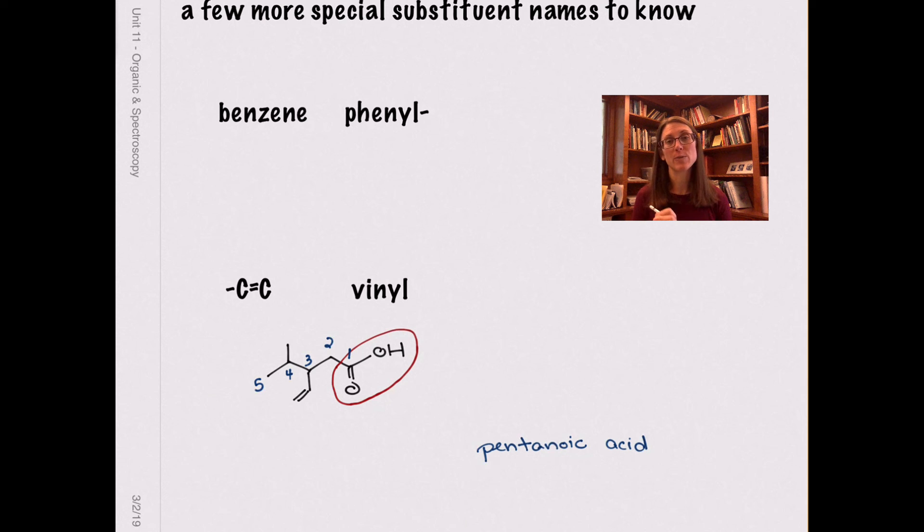We have to talk about where those other substituents are. I have both a methyl substituent at position four, and I have the vinyl substituent. So that vinyl substituent is just a carbon-carbon double bond that hangs off of your whole molecule, and so we're going to add those to our name. And this molecule is 4-methyl-3-vinyl pentanoic acid.